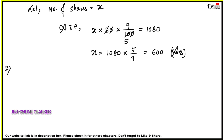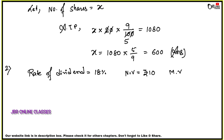Number two: find the percentage interest on capital invested in 18% shares when a rupees 10 share costs rupees 12. So rate of dividend equals 18%, nominal value equals rupees 10, and market value equals rupees 12. We need to find the percentage of return.